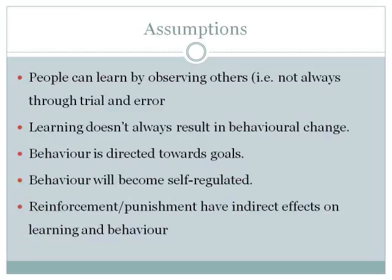Some basic assumptions in this theory are that people can learn by observing others. We don't necessarily have to work through trial and error — sometimes just observing how others react and the consequences from their behavior is enough for us to learn. Learning doesn't always have to result in behavioral changes; sometimes just processing the information is enough. Behavior is directed towards goals, which drives us, and will eventually become self-regulated depending on the response we get. Finally, reinforcement and punishment have indirect effects on learning and behavior, which we'll look at more closely.